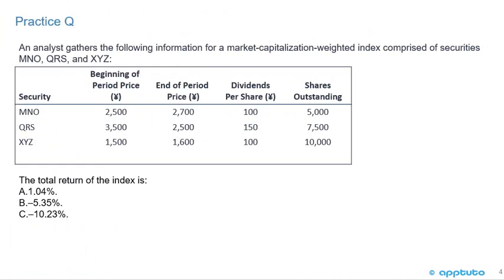Another practice question: an analyst gathers the following information for a market capitalization weighted index comprised of securities MNO, QRS, and XYZ — the exact same data. But this time they're asking for the total return of the index. Is the total return A, 1.4%, B, negative 5.35%, or C, negative 10.23%?